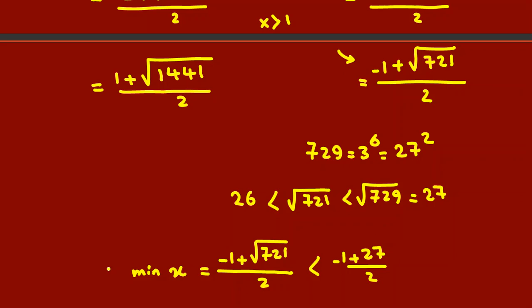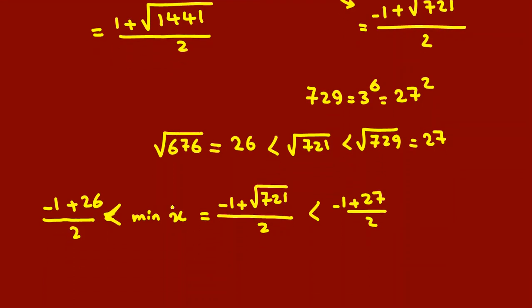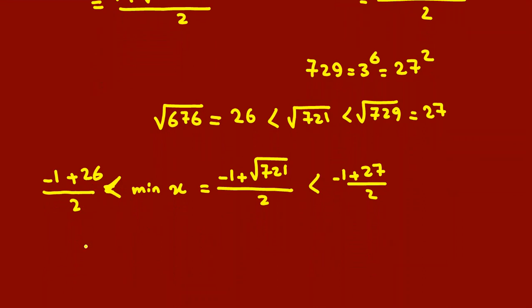This equals greater than (negative 1 plus 26) over 2, because square root of 721 is greater than 26, and 26² is 676. You should memorize 1 squared to 31 squared; they are useful in many problems. Here you say 26 minus 1 is 25, which is 12.5 for minimum x. 27 minus 1 is 26, so it's 13. The number is between 12 and 13. It is around this number here.